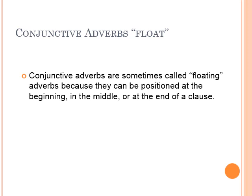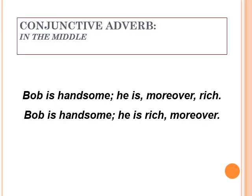Conjunctive adverbs are sometimes called floating adverbs because they can be positioned at the beginning, in the middle, or at the end of a clause. For example: 'Bob is handsome; moreover, he is rich.' Or 'He is, moreover, rich.' Or 'He is rich, moreover.' So they can float to different positions.